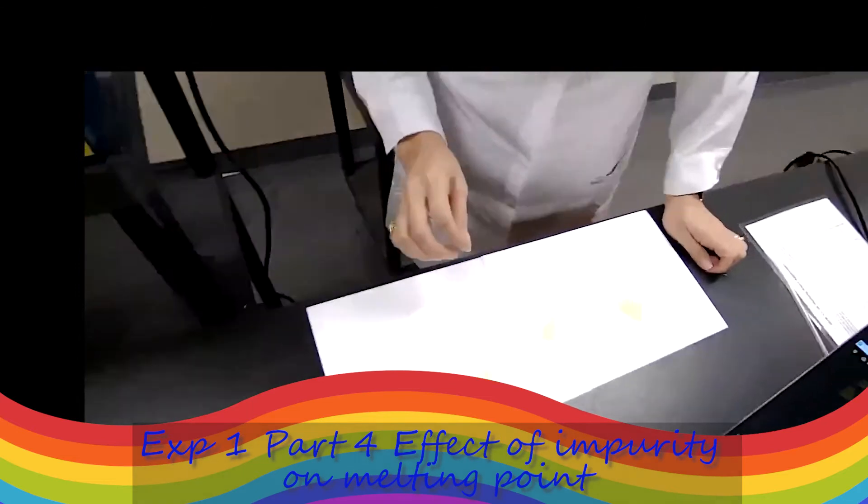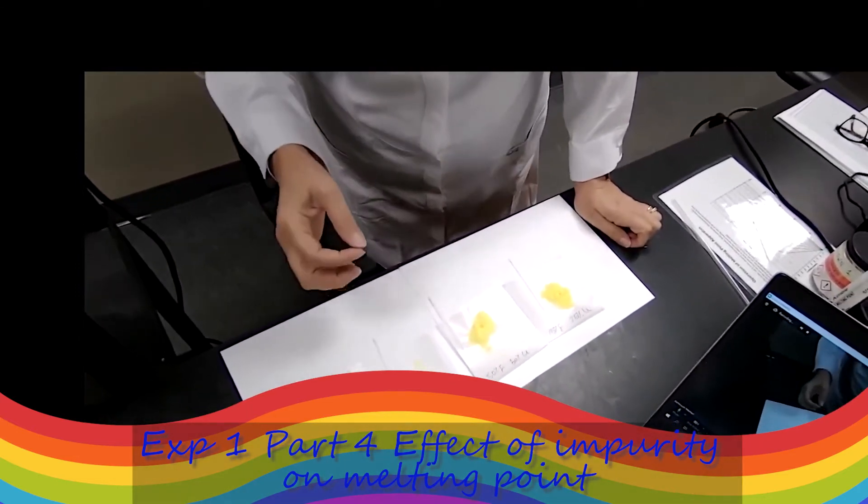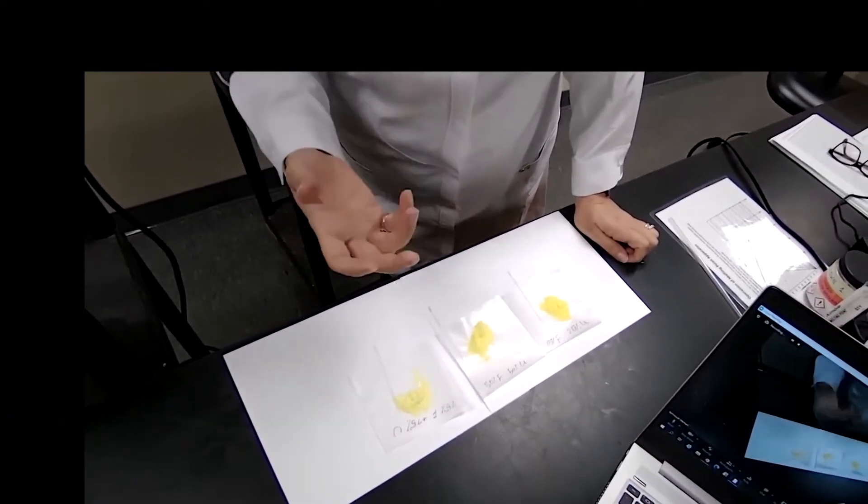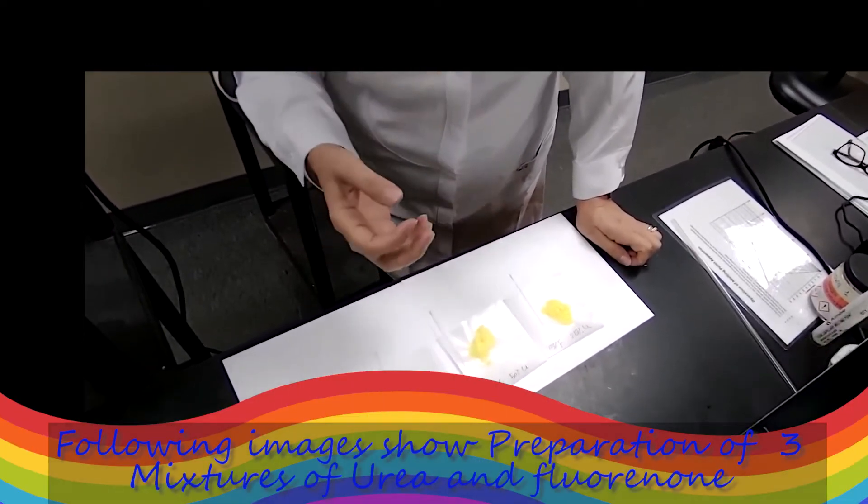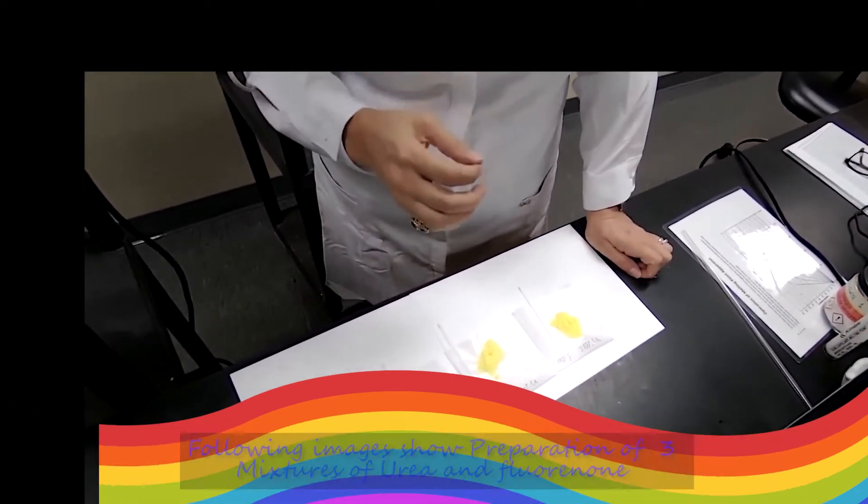The last part of the experiment is to study the effect of impurity or percent of impurity on melting point. The higher the percentage, the change in melting point or melting point depression is going to be more significant.